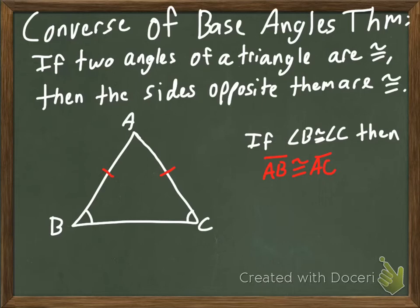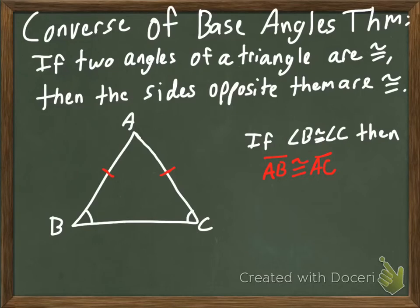Next we're going to talk about the converse of the Base Angles Theorem. Remember, converses are the opposite of theorems. For the Base Angles Theorem, we said if the two sides were congruent, then the angles are. Here we're starting with the angles — if two angles of a triangle are congruent, then the sides opposite them are congruent. So if angle B is congruent to angle C, then we can say that segment AB is congruent to segment AC.